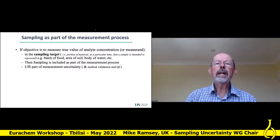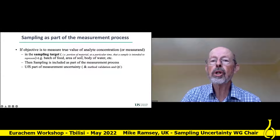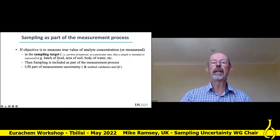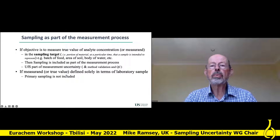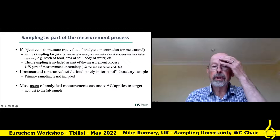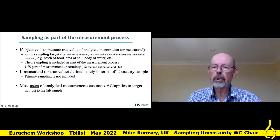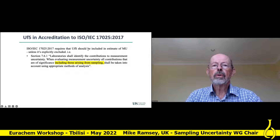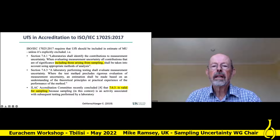When is sampling part of the measurement process? When you're trying to estimate the analyte concentration in the sampling target — a portion of material at a particular time that a sample is intended to represent — such as a batch of food, an area of soil, or a body of water. Most users of the analytical measurement think that when you report a value with an uncertainty, that applies to the target, not just the sample that came through the door. In ISO 17025, it's now explicit that in the measurement uncertainty estimation you should include the uncertainty arising from sampling.